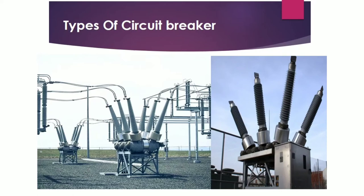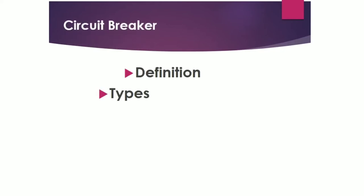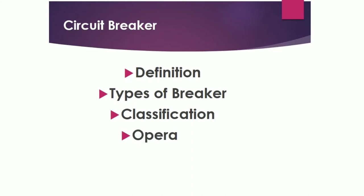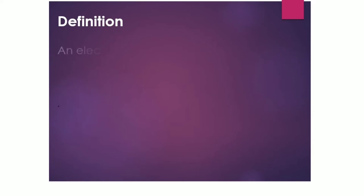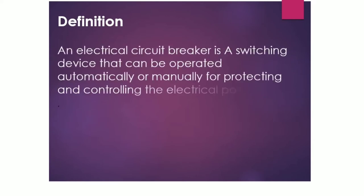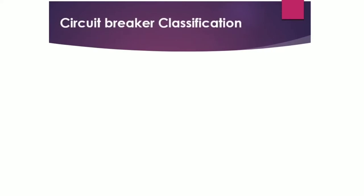Hello everyone, hope you are doing very well. Today our topic is circuit breaker, so without any delay let's begin. In this video we will discuss the various types of circuit breaker: the definition, the types, the classification, the operation and their uses. An electrical circuit breaker is a switching device that can be operated automatically or manually for protecting and controlling the electrical power system.